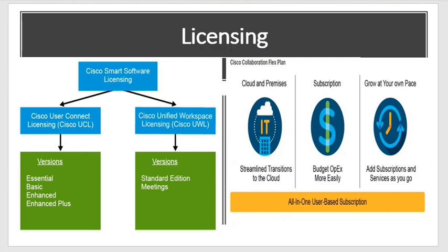Then we have the Cisco Collaboration Flex Plan. This is an all-in-one solution — it's like a subscription. For example, similar to an Azure subscription, which gives access to multiple services at once using one subscription, Cisco gives an all-in-one subscription for various services. It can provide cloud services and benefits like Budget OPEX, reducing cost — instead of paying for individual services, you take one subscription and get multiple services in one package.